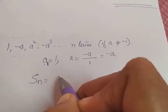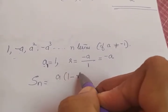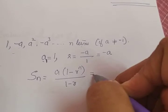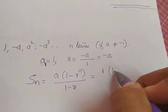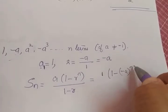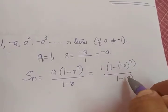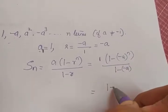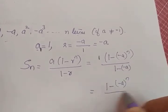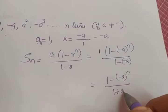Sn is equal to a(1 - rⁿ) / (1 - r), which equals 1 × (1 - (-a)ⁿ) divided by (1 - (-a)). So that is (1 - (-a)ⁿ) divided by (1 + a).